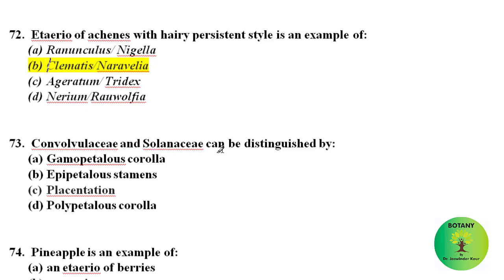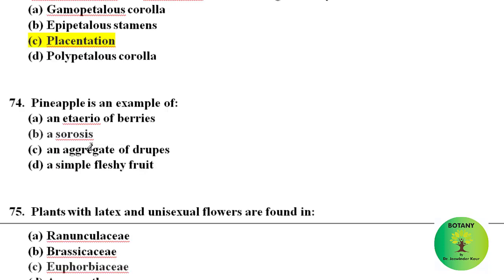Convolvulaceae and Solanaceae can be distinguished by their placentation. In both families, axile placentation is present. However, in family Solanaceae the placenta is swollen and obliquely placed, and this character is not present in Convolvulaceae, which has simple axile placentation.